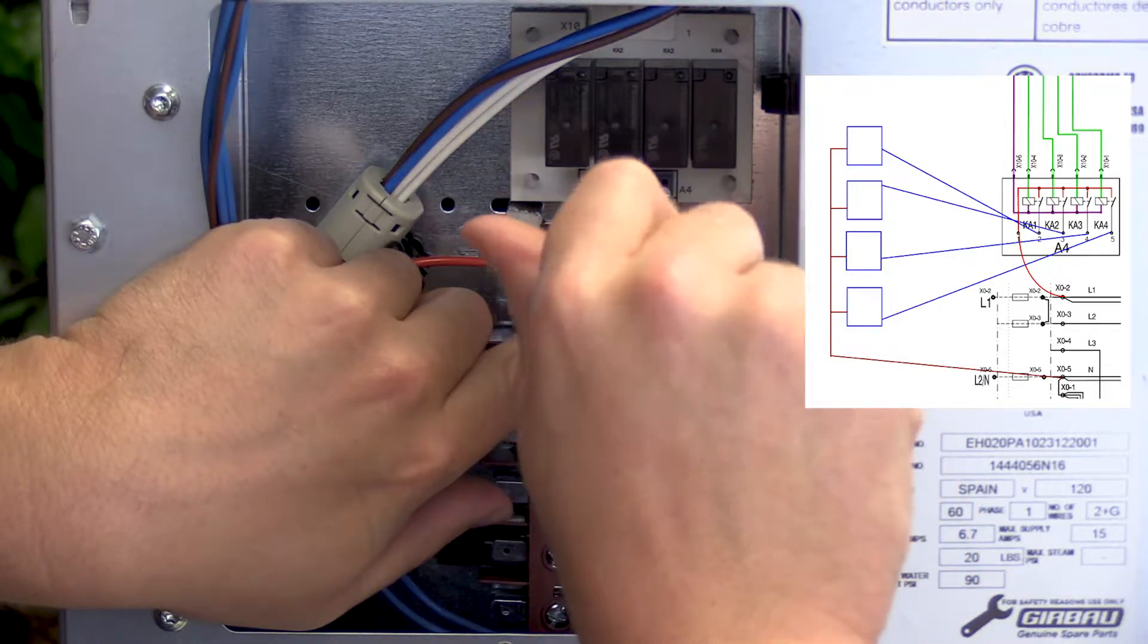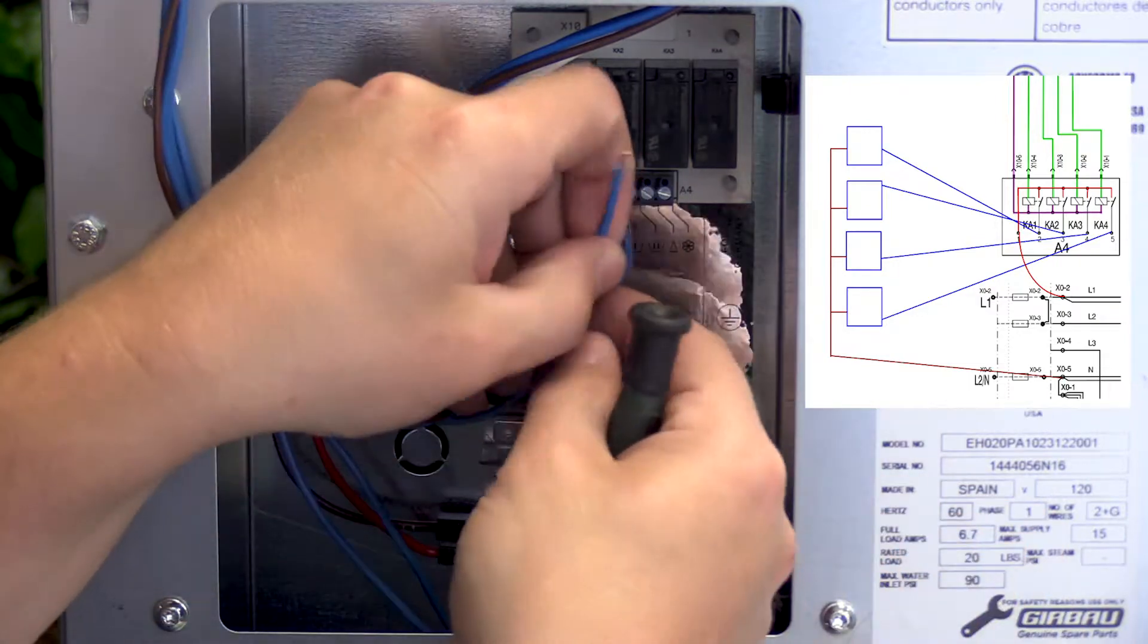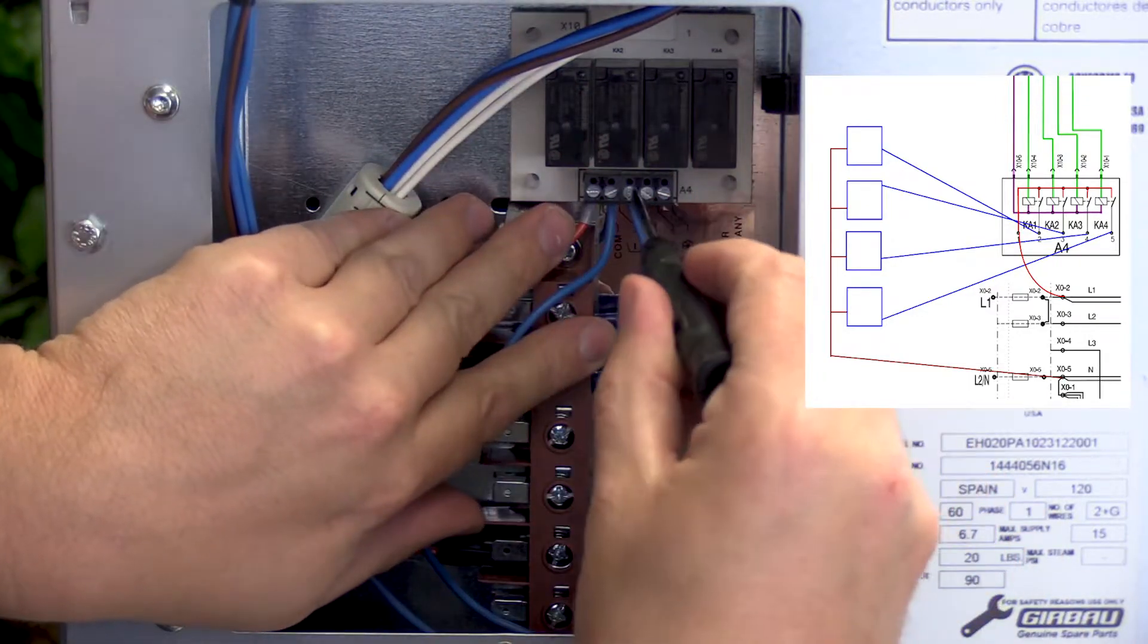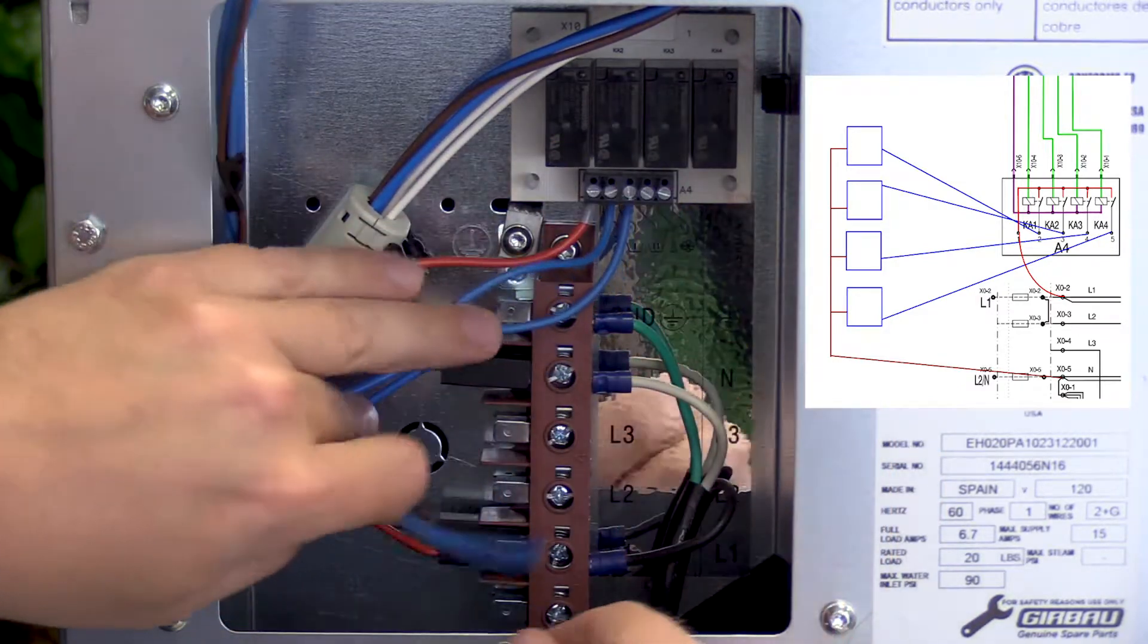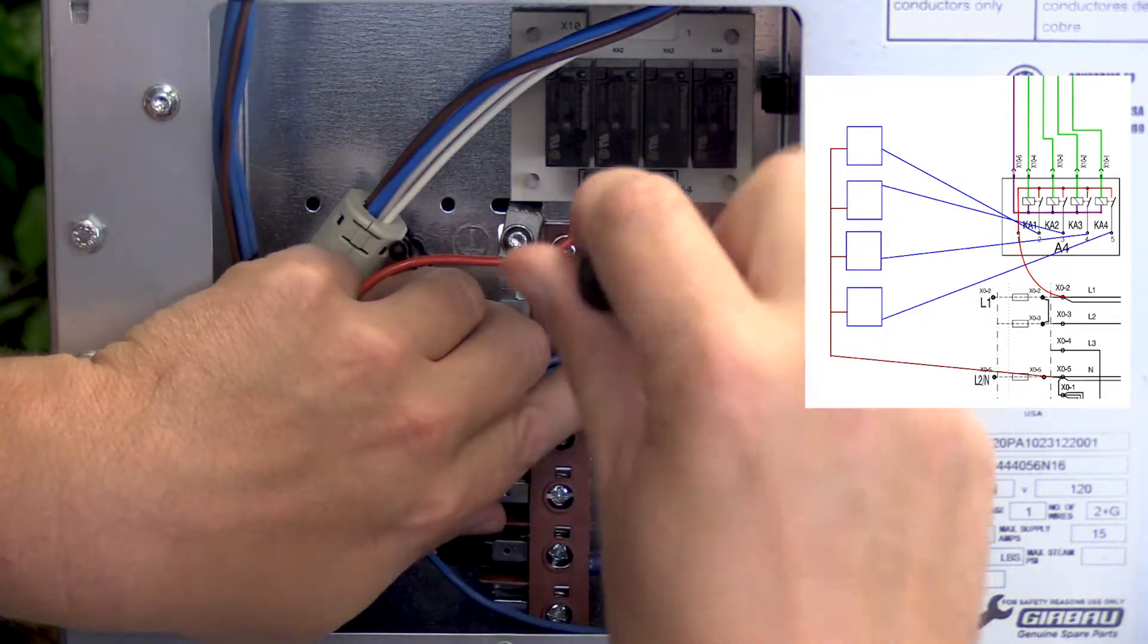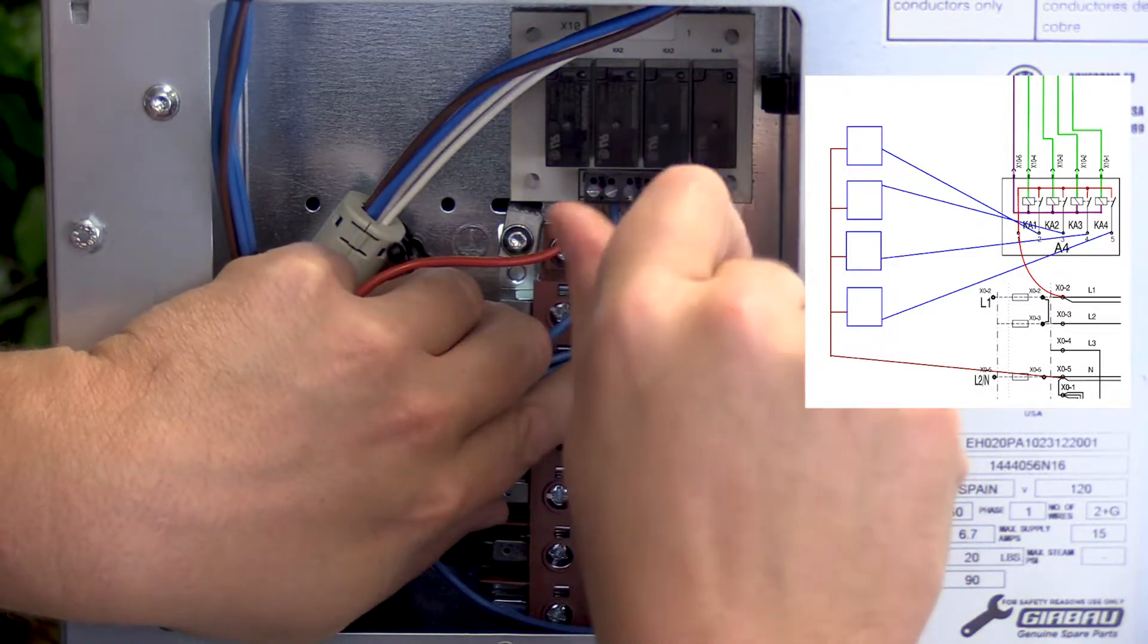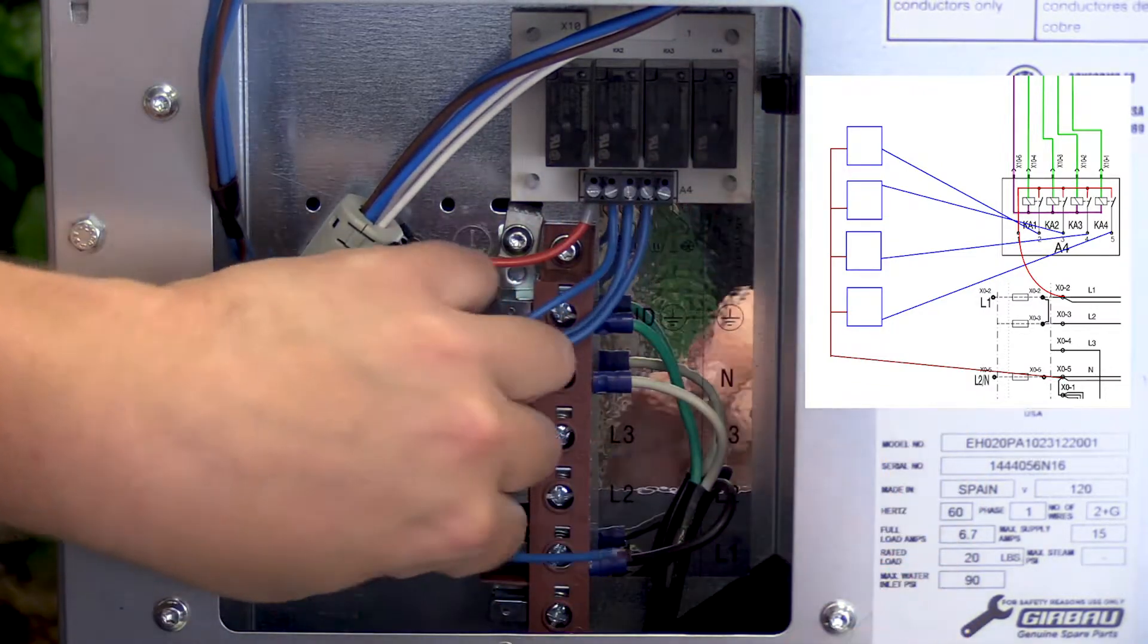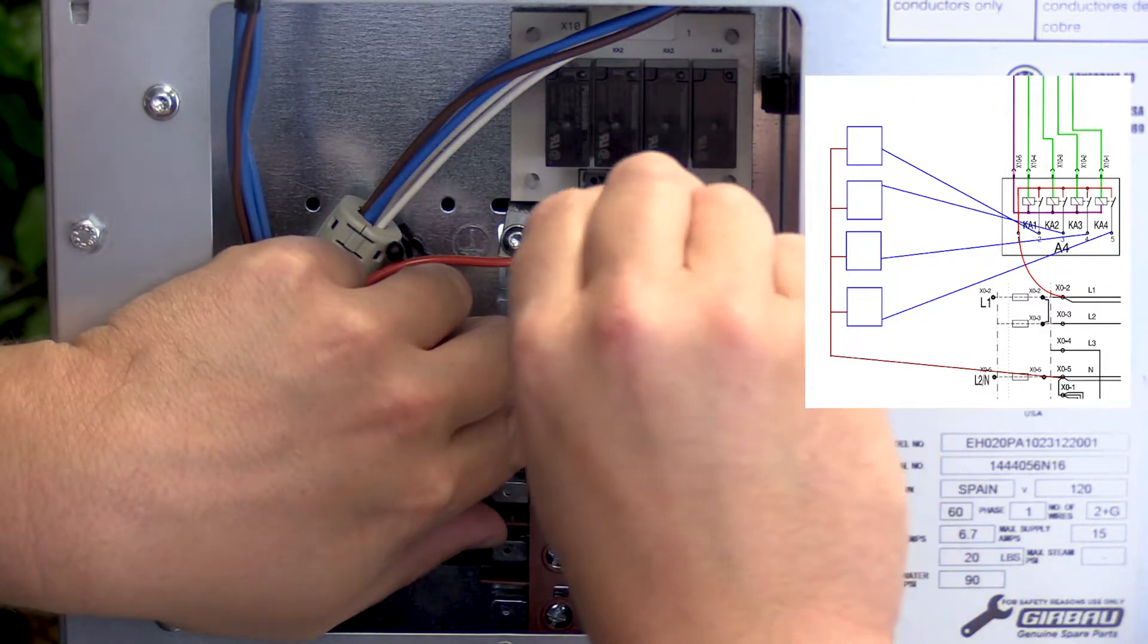Connect the signal outputs to the chemical dispensing system. Signal 1 is pre-wash, signal 2 is wash, signal 3 is bleach, and signal 4 is sour or softener.